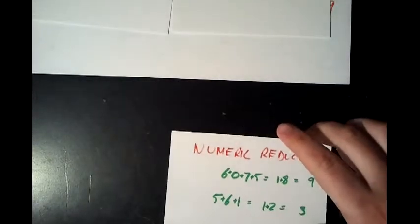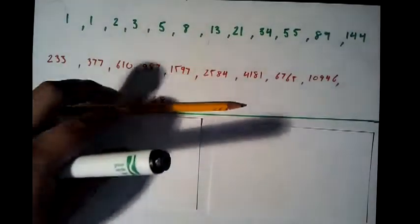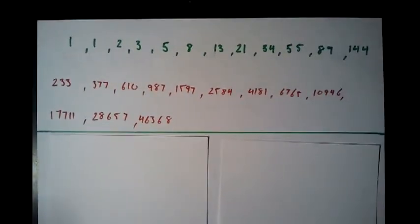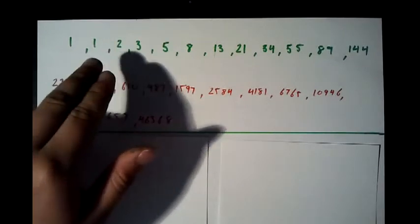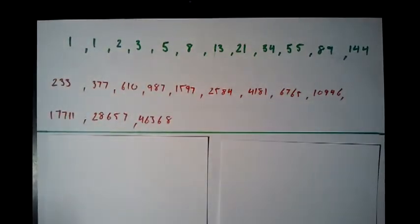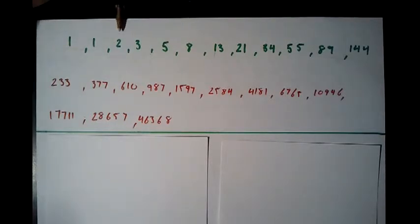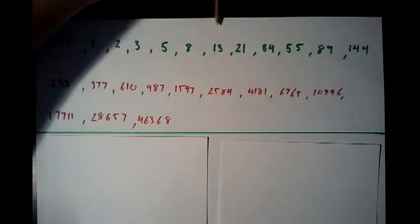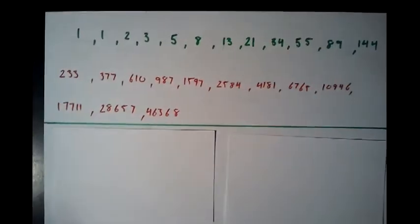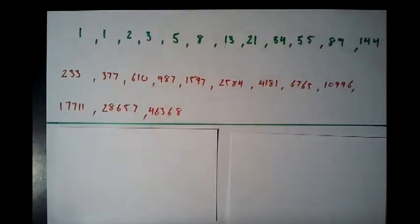Now that we have a feel for it, let's look at a cool place it shows up. What I've written here are the first 24 Fibonacci numbers. For those who don't know, the Fibonacci sequence starts with 1 and 1, and every number afterward is the sum of the previous two — so 2 is the sum of 1 and 1, 3 is the sum of 2 and 1, and 34 is the sum of 21 and 13. The first 12 are written in green and the next 12 in red.